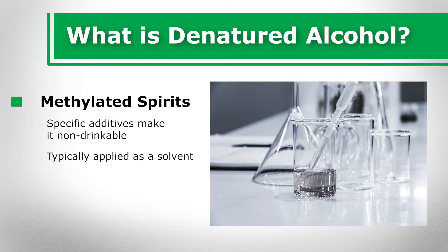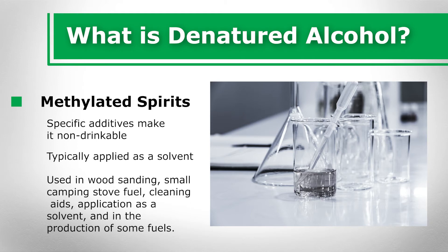Typically applied as a solvent, denatured alcohol is suitable for numerous application needs. Many forms contain approximately 10 percent methanol as the additive rather than other common alternatives such as isopropyl alcohol, denatonium, methyl isobutyl ketone, and acetone. Denatured alcohol is used in wood sanding, small camping stove fuel, cleaning aids, application as a solvent, and in the production of some fuels.